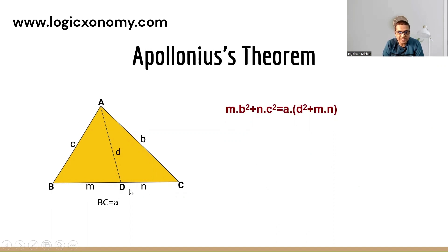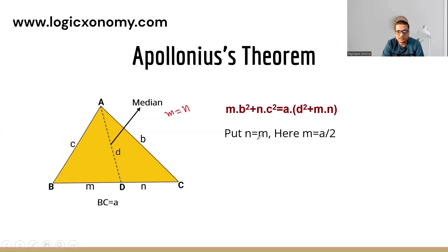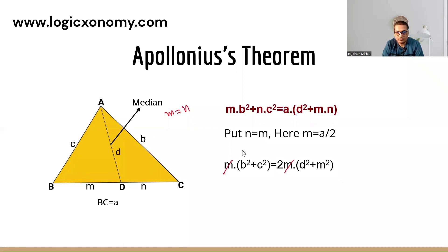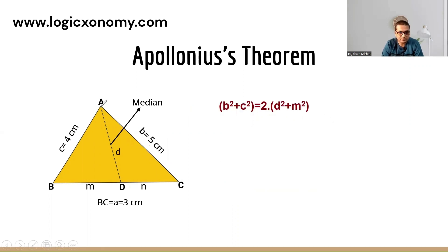Now Apollonius' theorem. In case BD = DC, meaning m = n, then AD is known as the median of the triangle. Substituting n = m into Stewart's formula, where m = a/2, we get: m(b² + c²) = a(d² + m²), where a = 2m. The m terms cancel, giving: b² + c² = 2(d² + m²).